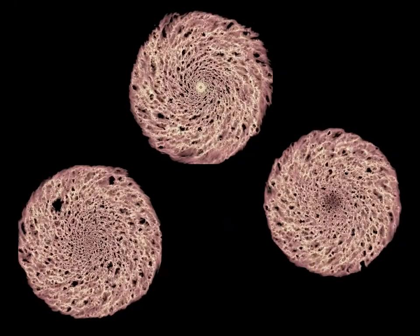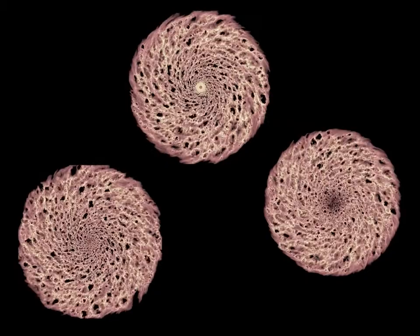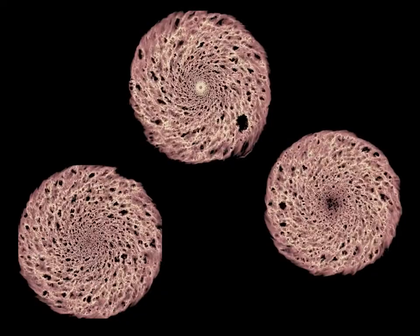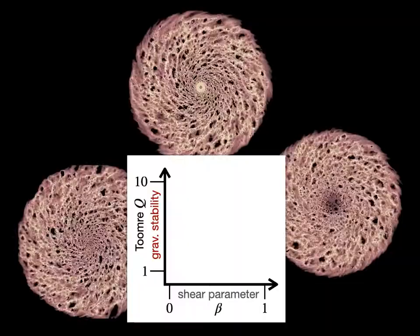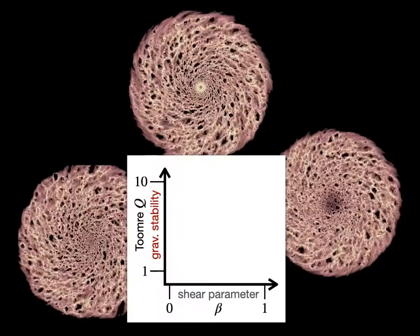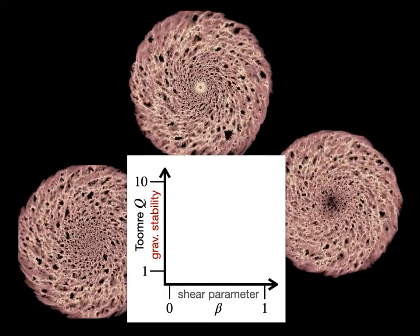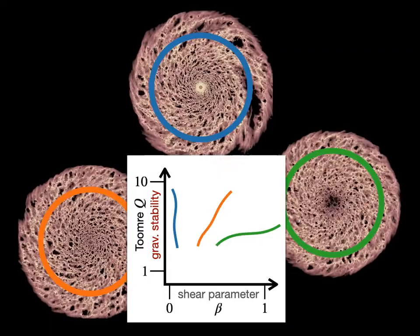We look at this problem at high resolution across a range of galactic environments using hydrodynamical simulations of isolated disk galaxies. This allows us to probe down to two parsec resolutions inside a sample of around 80,000 distinct molecular clouds across three different galaxies with different rotation profiles and so with different levels of shear and gravitational stability.